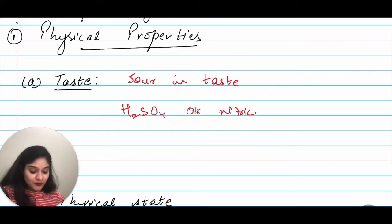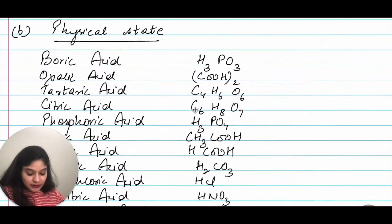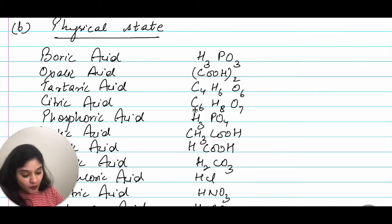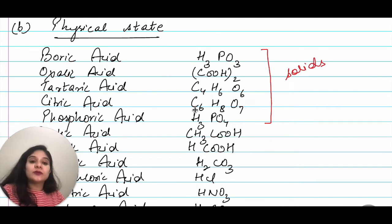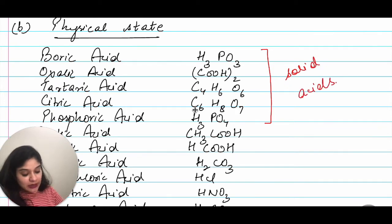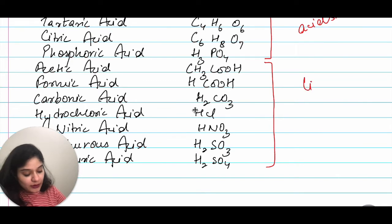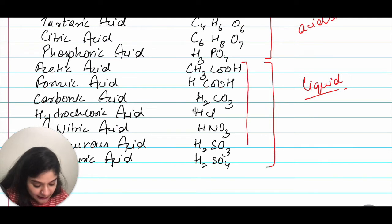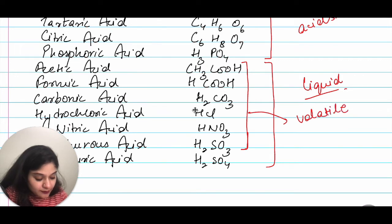Regarding physical state: from boric acid to phosphoric acid, all are solid acids at room temperature. All other acids are liquid at room temperature. Among the liquids, from acetic acid to sulfurous acid, all are volatile acids. H₂SO₄ is a non-volatile acid — remember that.